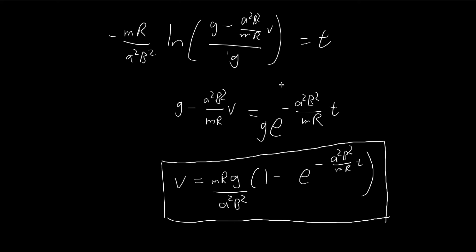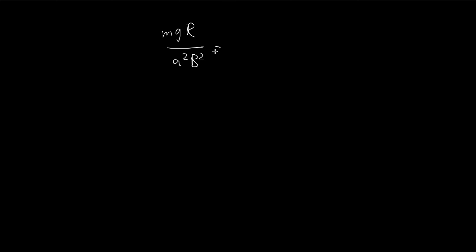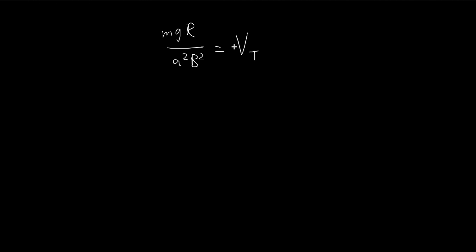Assuming our loop is large enough that after a sufficiently long time it's still falling and undergoing flux change, the exponential term shrinks toward zero because of the negative exponent. Once this term disappears, we're left with mgR/(a²B²), which is the terminal velocity — the final velocity this hoop tends toward. Let's define this as v_t.